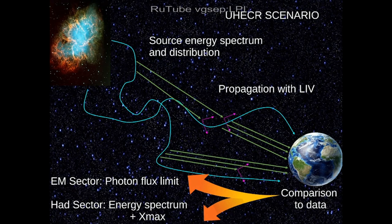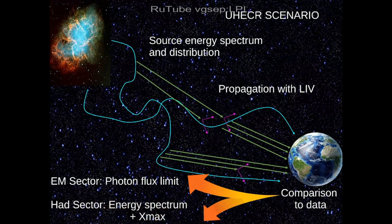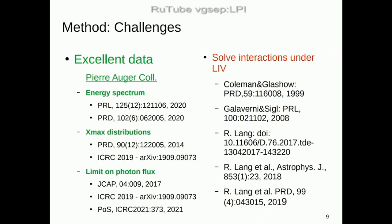We have done this in two sectors: the electromagnetic sector, involving only electromagnetic interactions, for which we use the photon flux limit measured by the Pierre Auger Observatory; and the hadronic sector, involving only hadronic interactions, for which we use the energy spectrum and Xmax distributions measured by Auger.